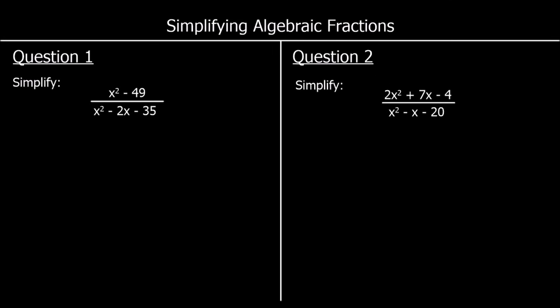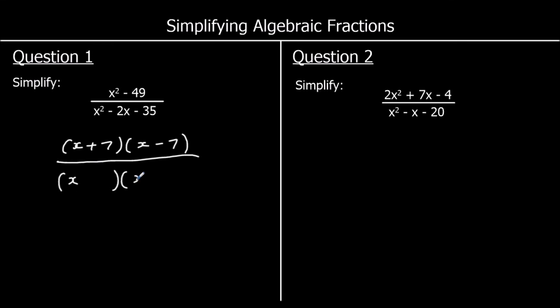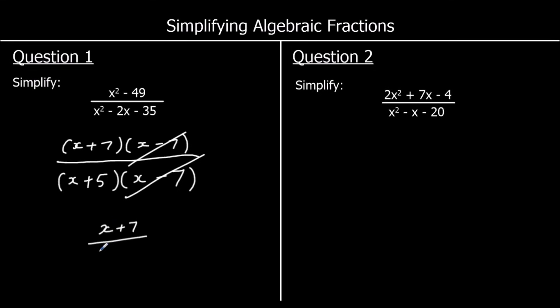And to finish up, two questions — pause the video, give them a go, and press play when you're ready for the answers. Question 1: we've got the difference of two squares on top, so (x plus 7)(x minus 7). On the bottom, what multiplies to make 35 and adds to make 2? It's 7 times 5, and it'll be plus 5 and minus 7. So x minus 7 is a factor of the top and the bottom — we can cancel it, leaving x plus 7 over x plus 5.